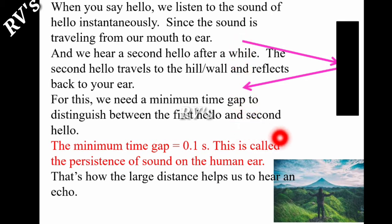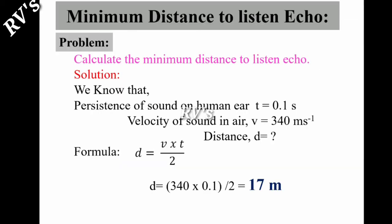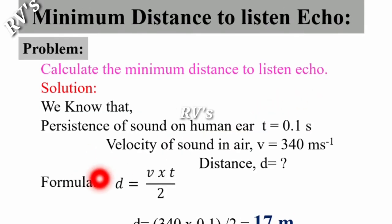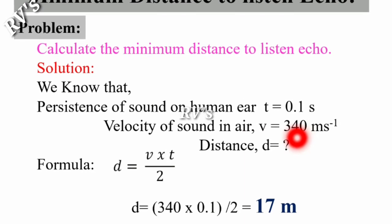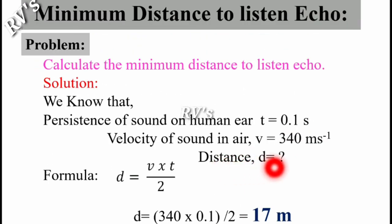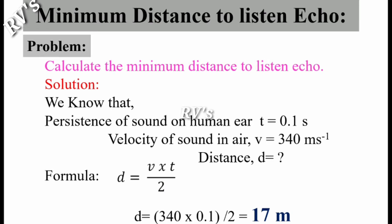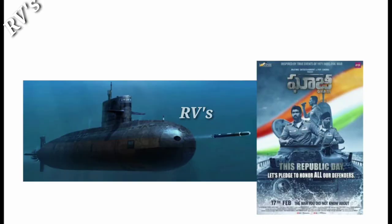We know that the persistence of sound is 0.1 seconds. Velocity of sound in air is equal to roughly 340 meters per second. We need to calculate the distance. We know that d equals v times t by 2. Therefore, d equals 340 times 0.1 seconds by 2. That is 17 meters. So if there is a 17 meters distance from the observer and wall or obstacle, then we can listen to echoes. That is the minimum distance.